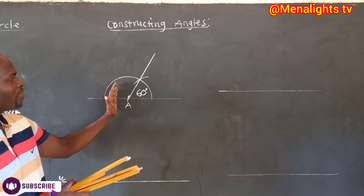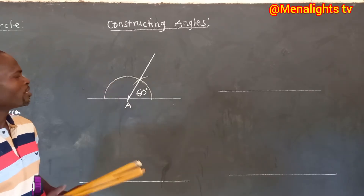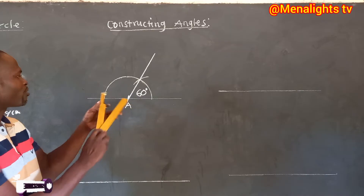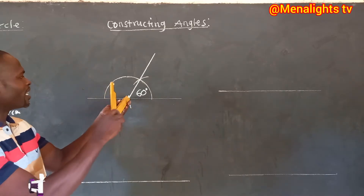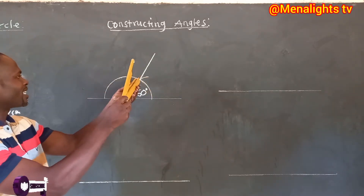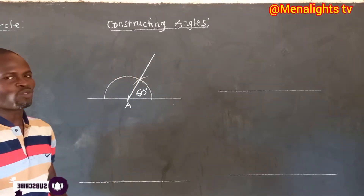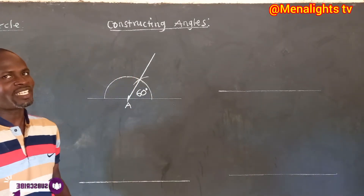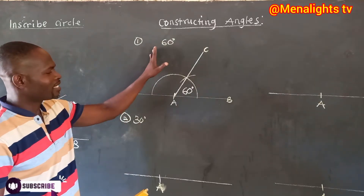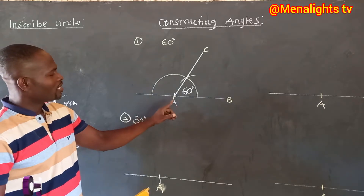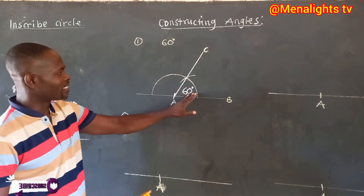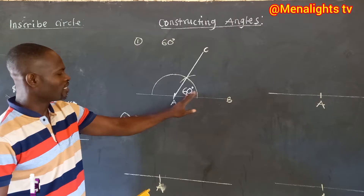The angle you have on the other side is 120 degrees. So when you are asked to draw 120 degrees, as soon as you are done with the semi-circle, you stand here, make an arc, then another arc, and that is 120 degrees. The angle BAC is the 60 degrees.